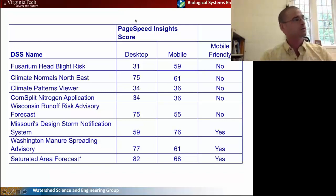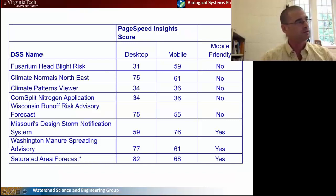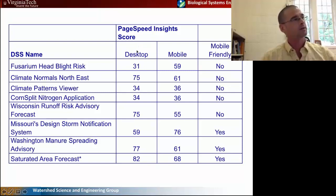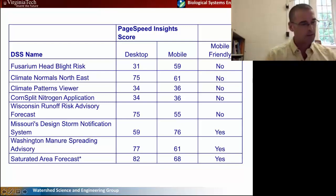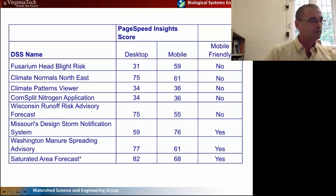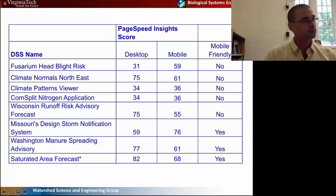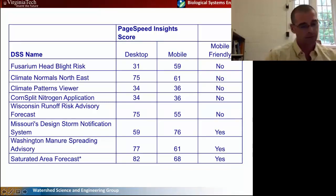Since people were talking about mobile-friendly applications, we did an analysis of several different decision support tools — three of them discussed here: Wisconsin, Washington, and our model — looking at how desktop or mobile friendly they were. It turns out a lot of these other tools aren't mobile friendly because they rely on proprietary software or require downloading and installing a plugin. The ones that are relatively simple, like Washington's and ours, tend to be pretty mobile friendly, which could enhance their use across different producer spectrums.